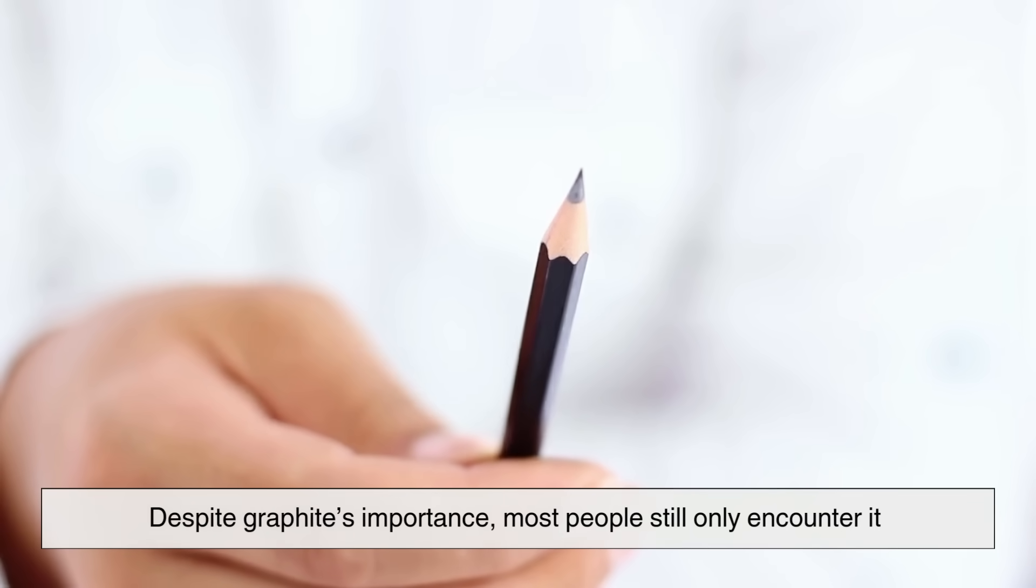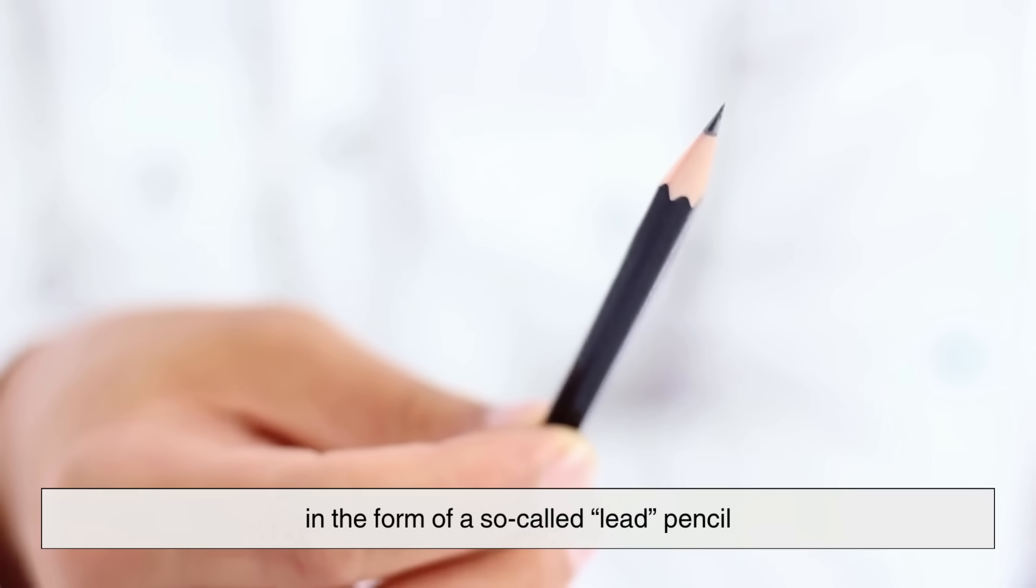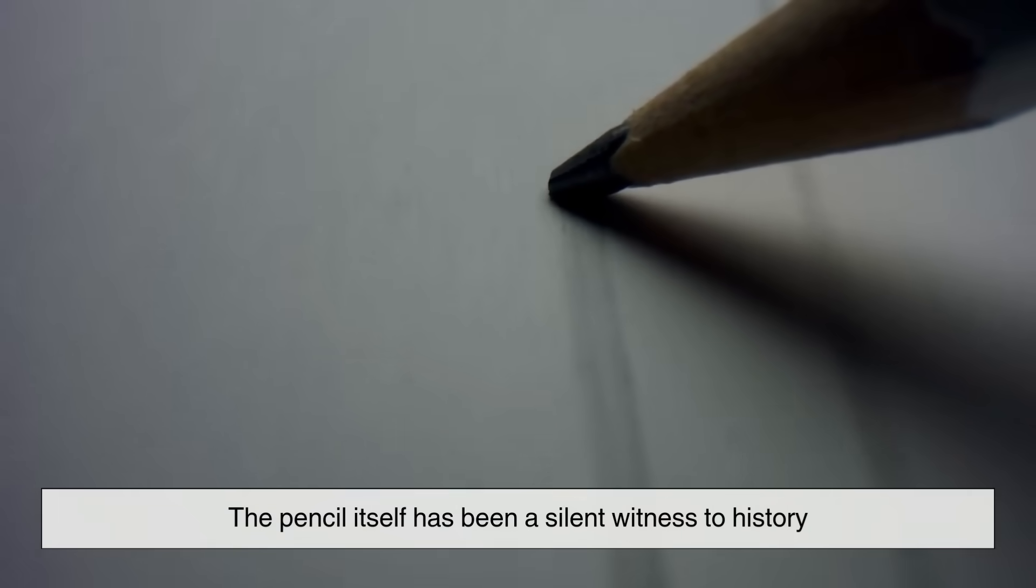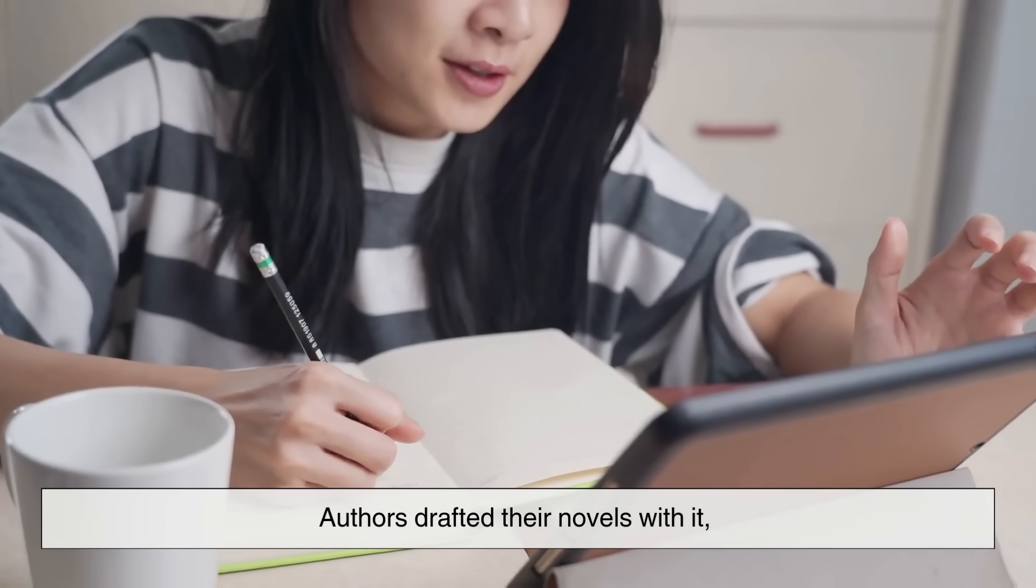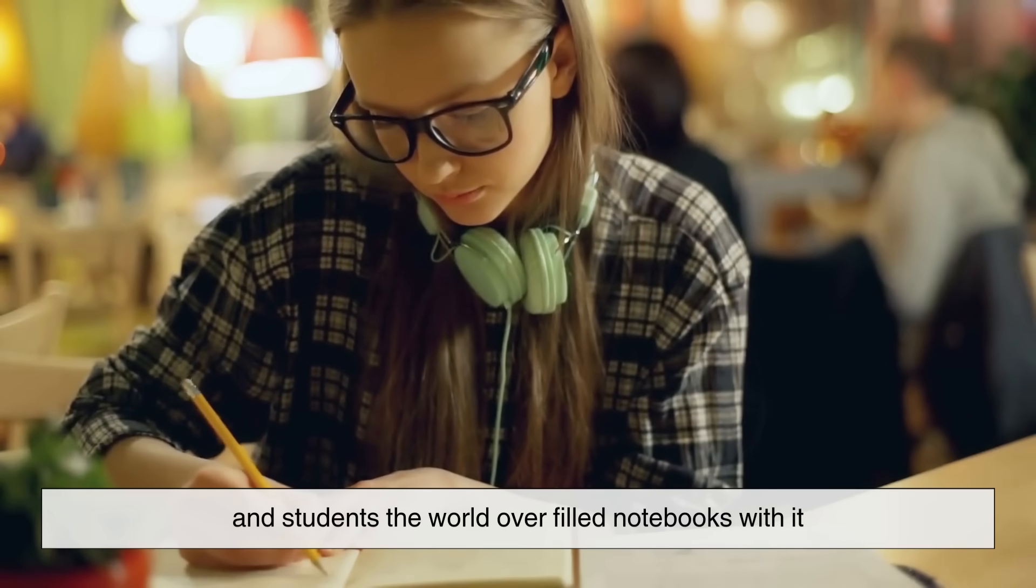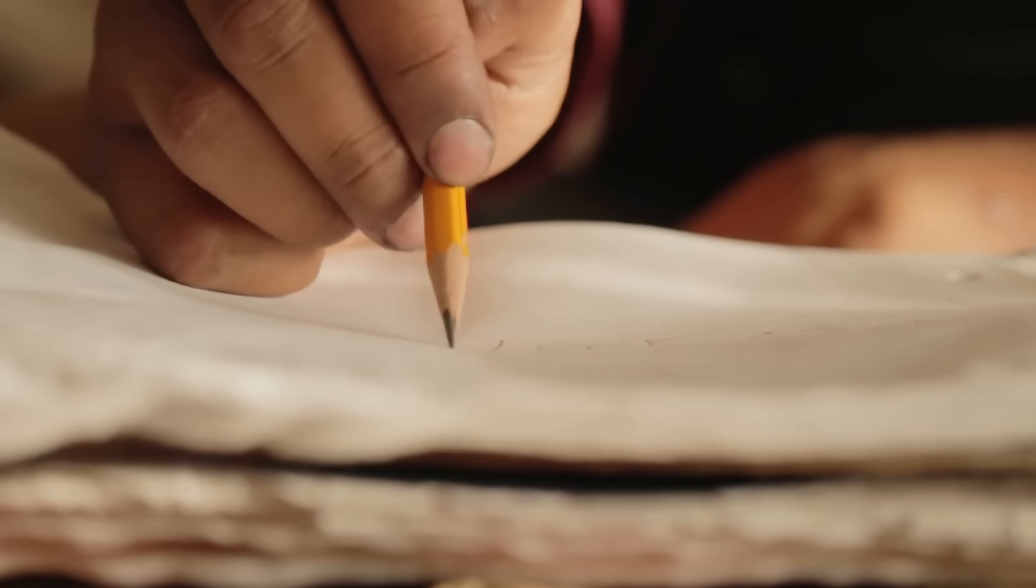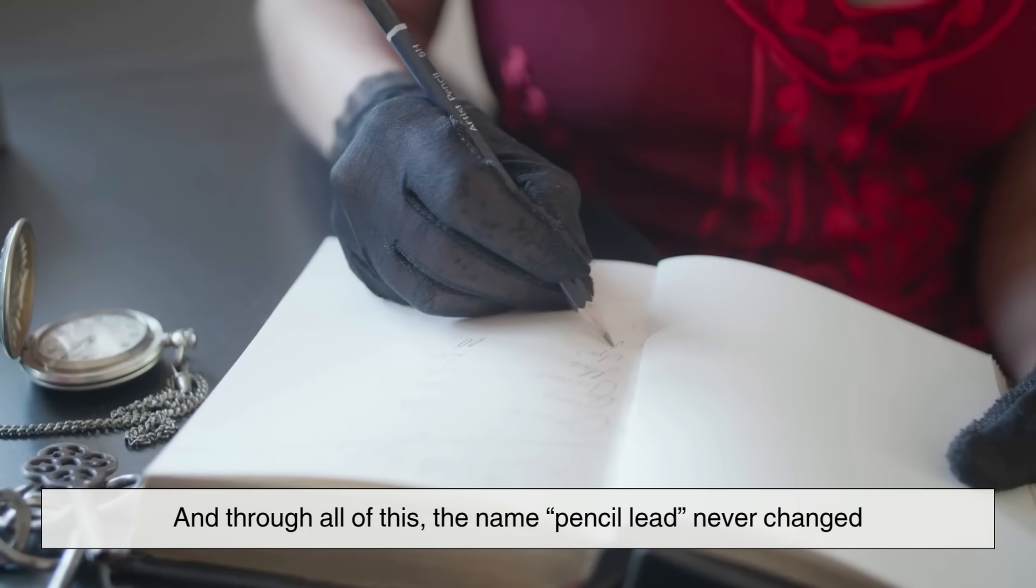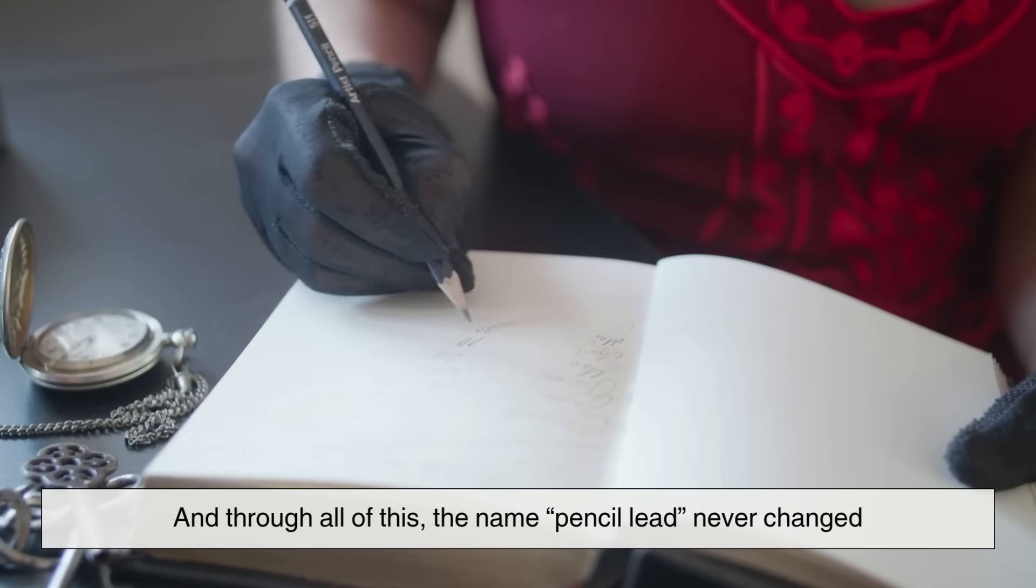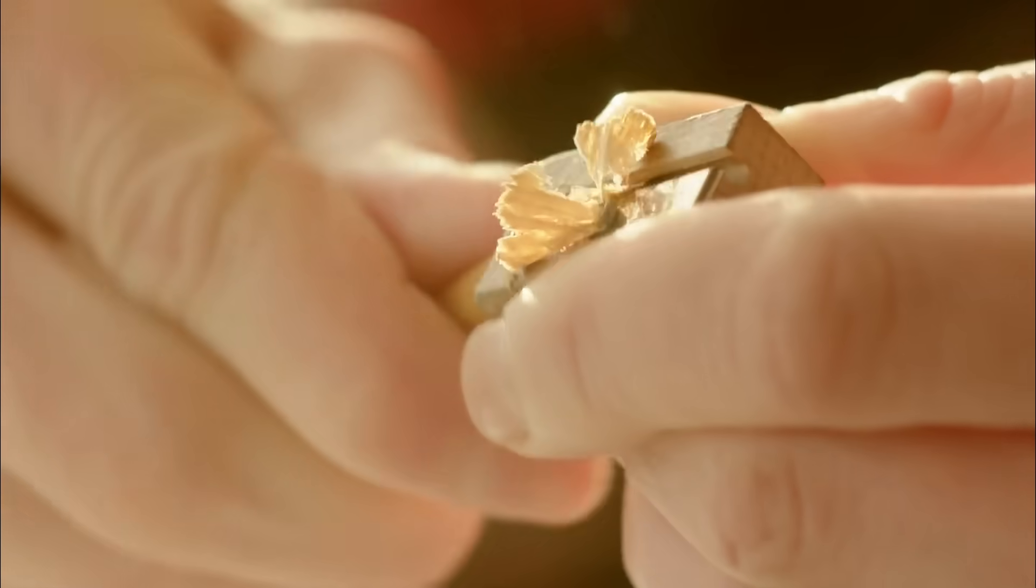But interestingly, despite graphite's importance, most people still only encounter it in the form of a so-called lead pencil. The pencil itself has been a silent witness to history. Authors drafted their novels with it, architects designed buildings with it, and students the world over filled notebooks with it. From da Vinci's sketches to the Apollo astronauts' notes in space, the humble pencil has played a role far greater than its size suggests. And through all of this, the name pencil lead never changed. It's a reminder of how small mistakes in understanding can ripple through centuries of culture.